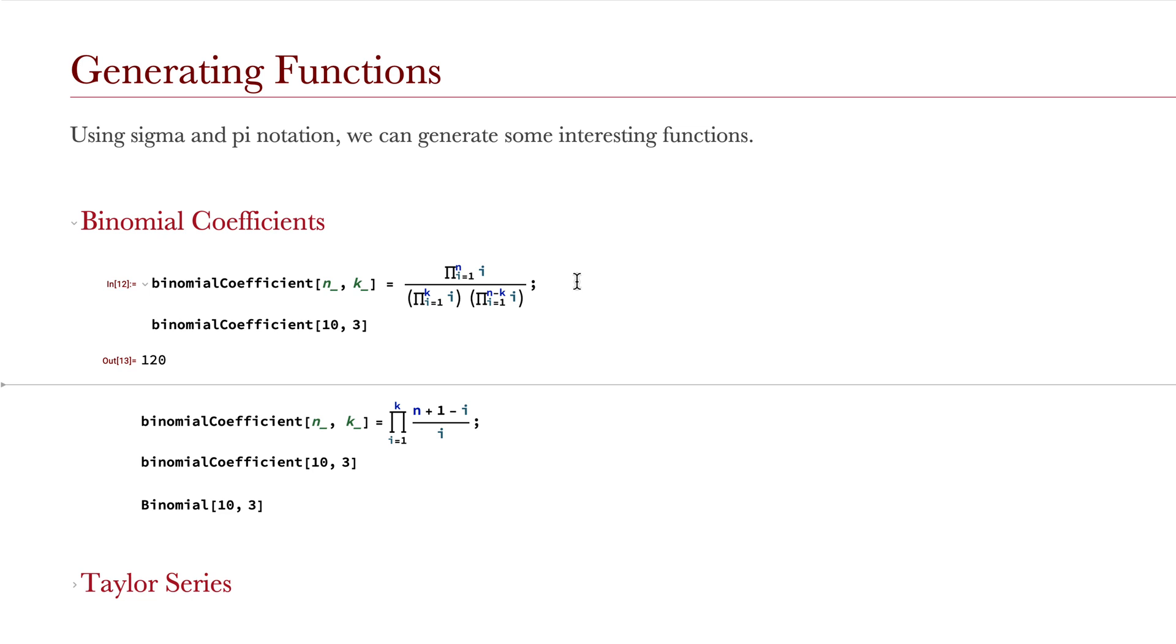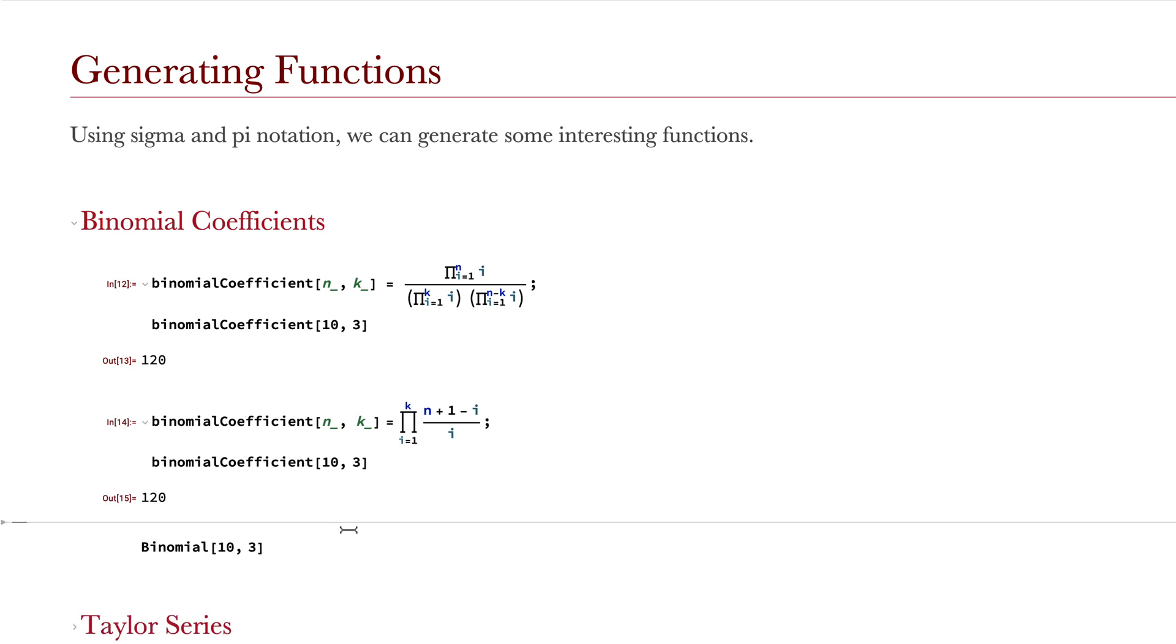A keen eye might notice that this is actually just using the factorial definition written in pi notation and the normal definition of the binomial coefficient of n, k. Using some techniques to simplify this, we can get a slightly different definition that no longer resembles the original definition. When we evaluate this and the normal definition, they all come out to be identical.